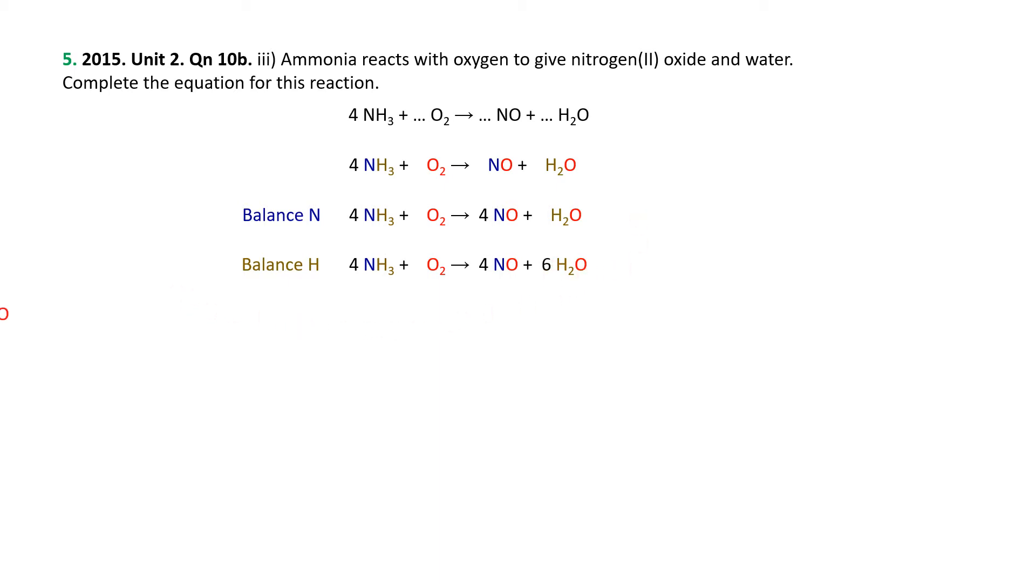Now at this stage, we can look at the oxygens. We got two on the left. We got four plus six or ten on the right. So how do we turn the two on the left to ten to balance out the right? Well, we just need five of the O2s. So there it is nicely balanced, hopefully in a easy to follow stepwise fashion.